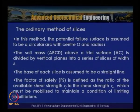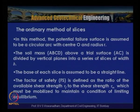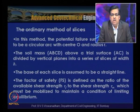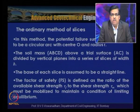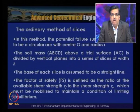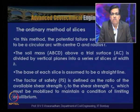In the ordinary method of slices, the potential failure surface is assumed to be circular in nature with centre at O and radius R. The soil mass within the circular arc zone, from the slope surface to the crest zone, is divided into vertical slices of width B. The base of each slice is assumed to be a straight line for convenience. The factor of safety is defined as the ratio of available shear strength τf to the shear strength τm that must be mobilized to maintain limiting equilibrium.